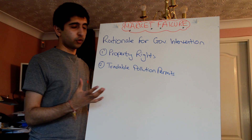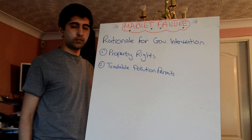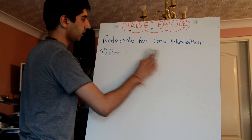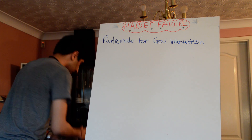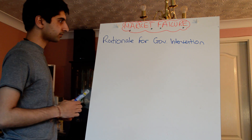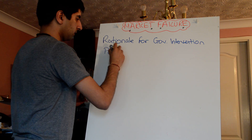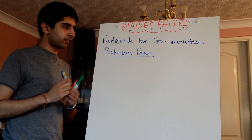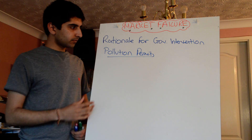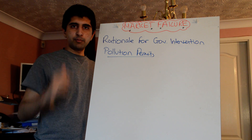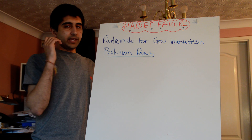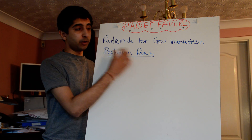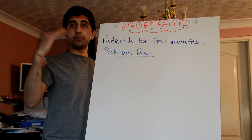Tradable pollution permits is another good thing we can talk about here, and this is something that has been used in the real world, so it's useful for evaluation. Let's briefly understand what these are. What happens is the government decides to set a level of pollution that it wants in the economy. The way it ensures pollution is reduced to that level is by allocating tradable pollution permits to firms, allowing them to pollute up to a certain level.